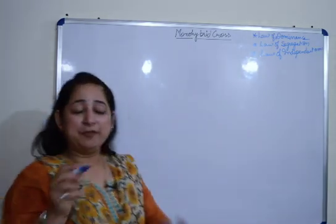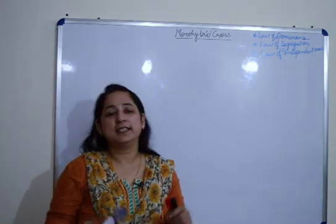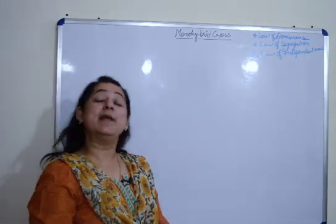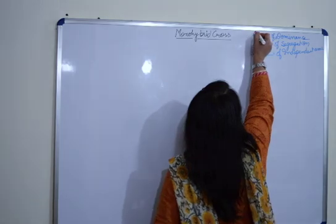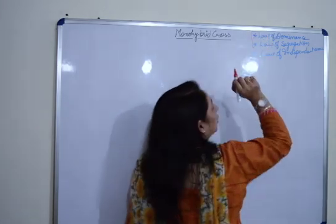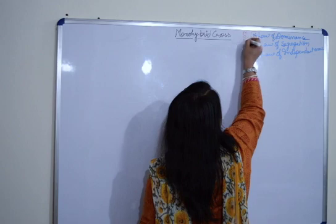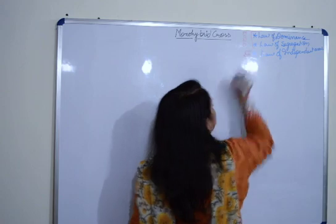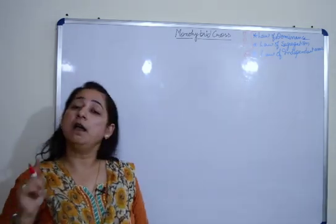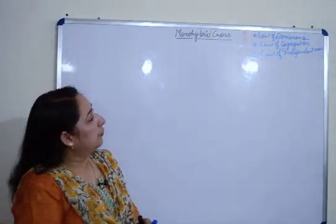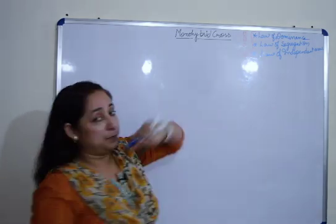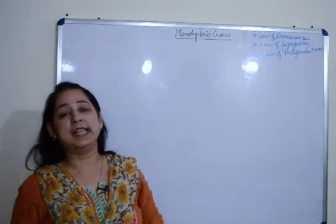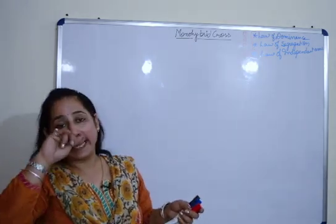Now, he was a mathematician basically, so he was not satisfied by just giving the laws. In order to prove his laws, he gave two mathematical expressions. These two laws, law of dominance and segregation were explained by the monohybrid cross. Whereas the last law, law of independent assortment, was explained by a dihybrid cross. We will focus on monohybrid cross here, that means we will focus on the cross which is responsible for explaining law of dominance and segregation in this video. And in our next video, we will talk about the dihybrid cross.